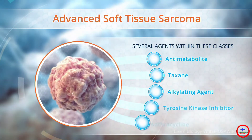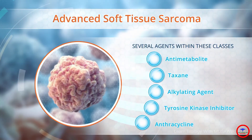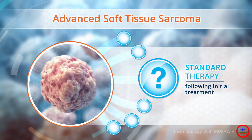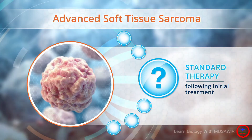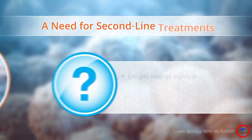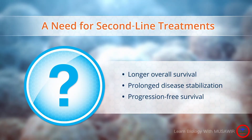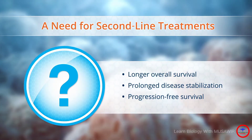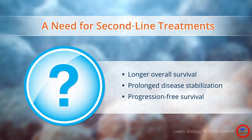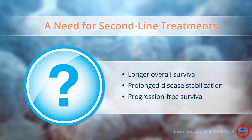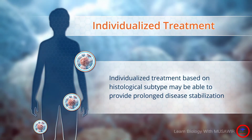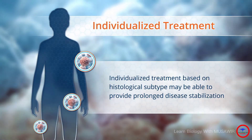Standard first-line treatment for advanced soft tissue sarcoma includes the use of anthracyclines with or without additional agents. Several agents have been shown to have some activity in advanced soft tissue sarcoma, but even as new treatments are emerging there is still no recognized standard therapy following failure of initial treatment. There is a need for second-line treatments that can help achieve not only longer overall survival but also prolonged disease stabilization and progression-free survival. Individualized treatment based on histological subtype may be able to provide prolonged disease stabilization.